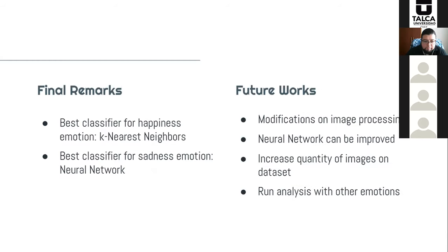We obtained good results on classifying happiness and sadness emotions as fake or genuine, similar to those presented in the literature. The best classifier for happiness emotion was K-nearest neighbors, and the best classifier for sadness emotion was the neural network. In addition, most papers published in the facial recognition area use fake emotions performed by actors, but we have shown that using acted emotion datasets to classify real emotions does not necessarily reflect a real scenario, even with good results. Thus, a dataset with elicited emotions can create a better mapping of user features.